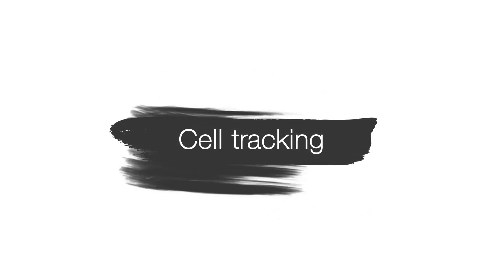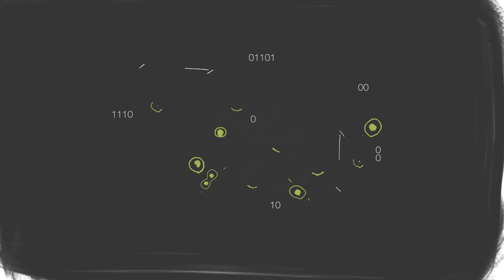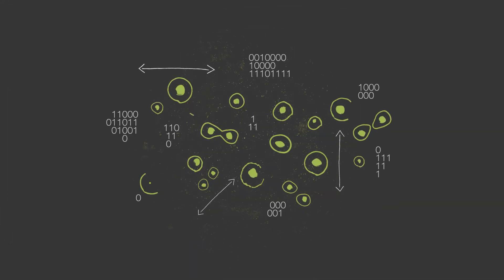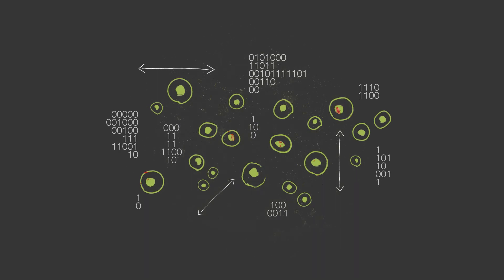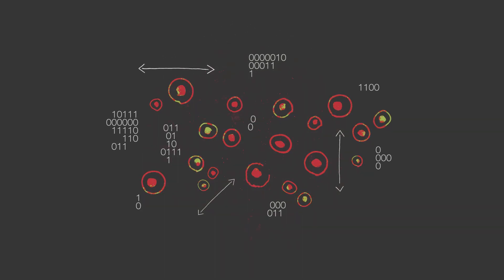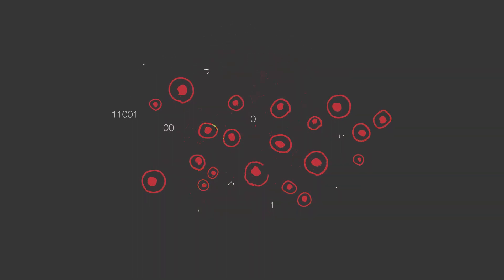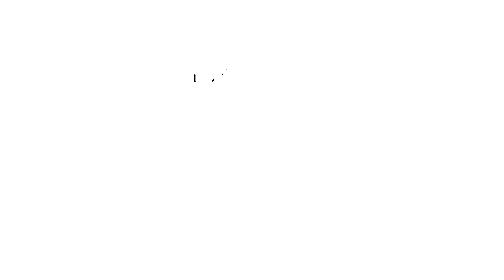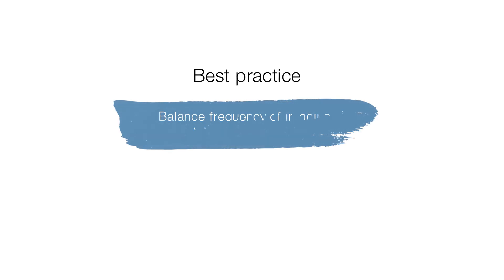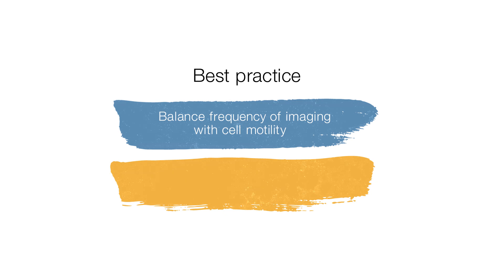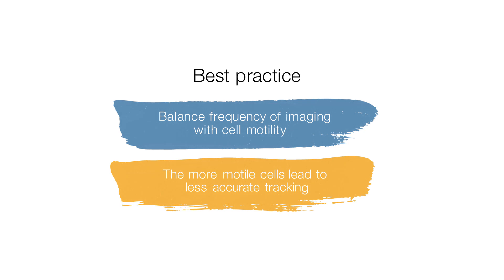Cell tracking. The more images you acquire between time points, the easier it is to track cells from beginning to end. A best practice is to balance the frequency of imaging, which can lead to phototoxicity, with cell motility. Highly motile cells can lead to less accurate tracking between time points.